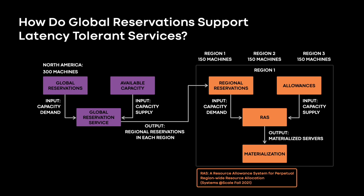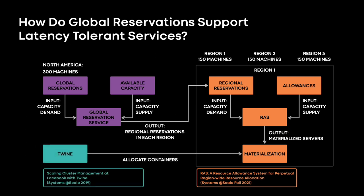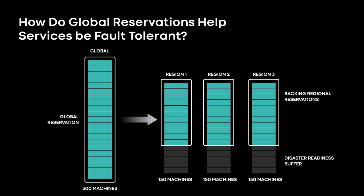Instead of creating individual reservations within each region, the service owner creates a single global reservation, and the global reservation service figures out how much capacity to allocate in each region to meet this demand and to be fault tolerant. Since these services are latency tolerant, they can be easily shifted across regions, and we leverage this to continuously run global-wide optimizations. For example, a service owner requests 300 servers in North America. The global reservation service decides to provision 150 servers each in three different regions, for a total of 450 servers. The extra 150 machines serve as a fault tolerance buffer, so that if we lose any region, the other regions still have sufficient capacity.